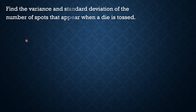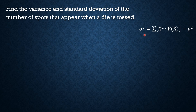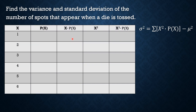Let's find the variance and the standard deviation of the number of spots that appear when a die is tossed. We can write the formula first in computing for the variance so we have an idea of what should be in our table. By looking at the table, the first column x is our random variable. We have the values 1, 2, 3, 4, 5, 6 — simply the number of spots that appear when a die is tossed.